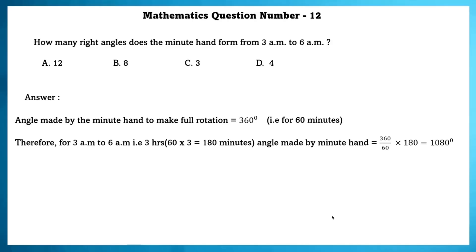Therefore for 3am to 6am, angle made by minute hand is equal to 360 by 16 to 180 which is equal to 1080 degrees. In 1080 degree, we have 12 right angles. Number of right angles formed by the minute hand from 3am to 6am is equal to 12.